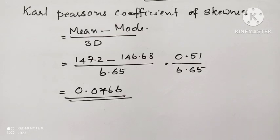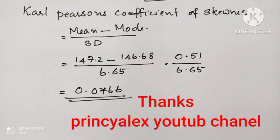Now we can find Karl Pearson's coefficient of skewness: mean minus mode divided by standard deviation. Substituting each value, we get the answer as 0.0766. Thanks.